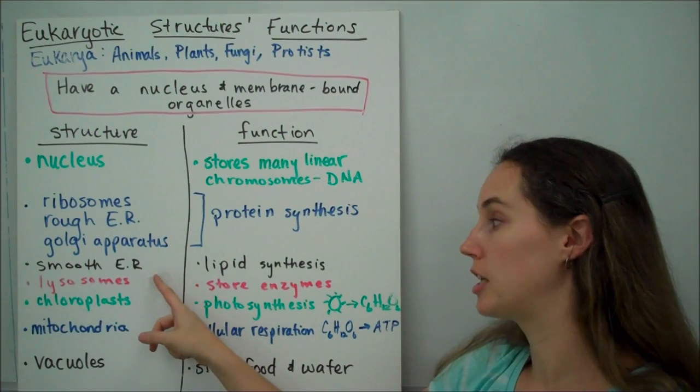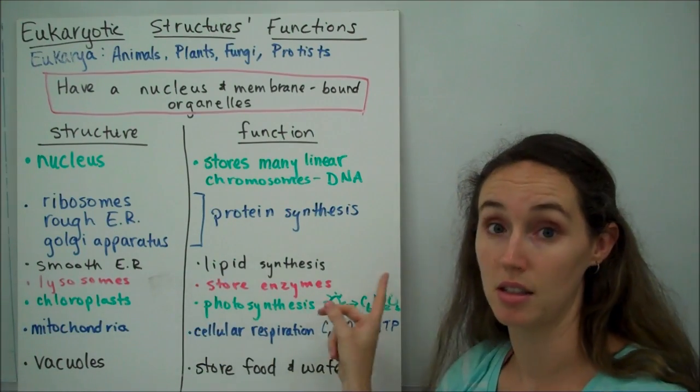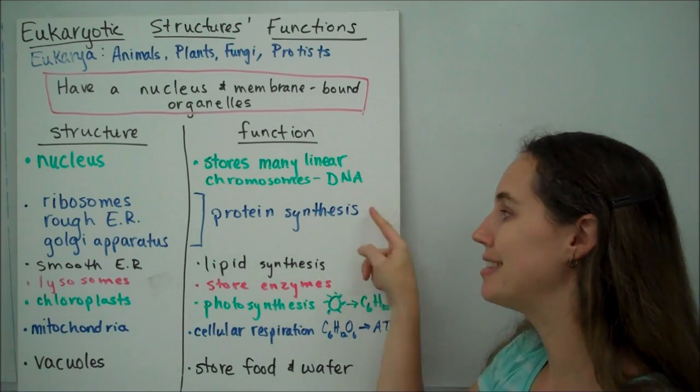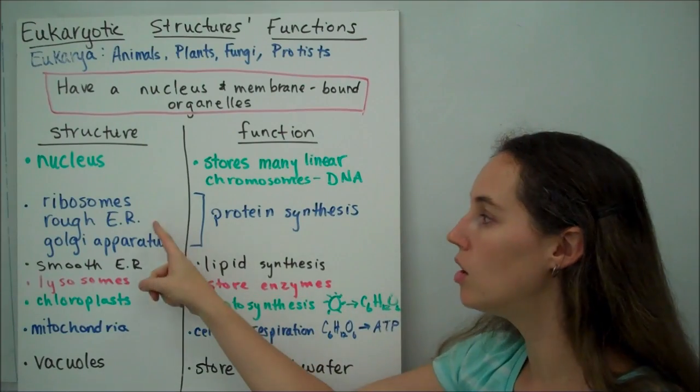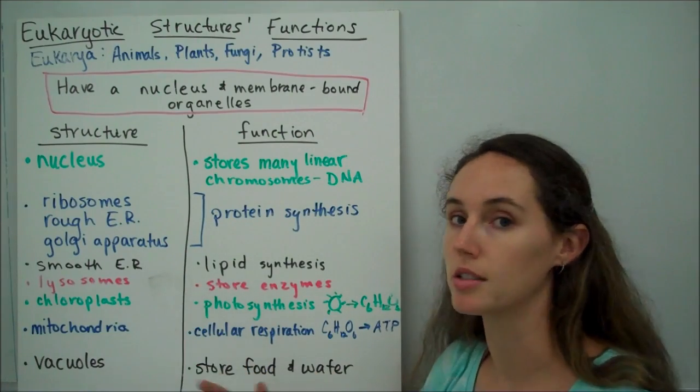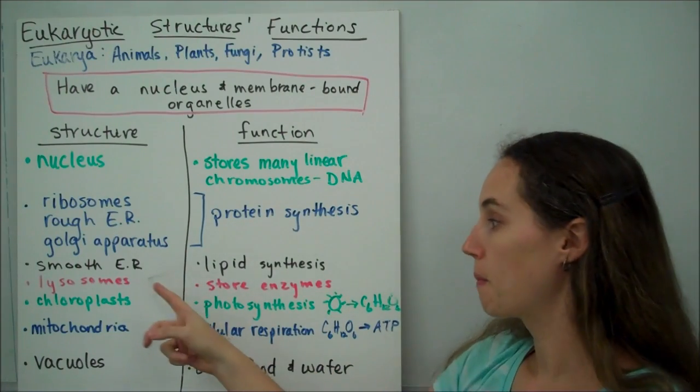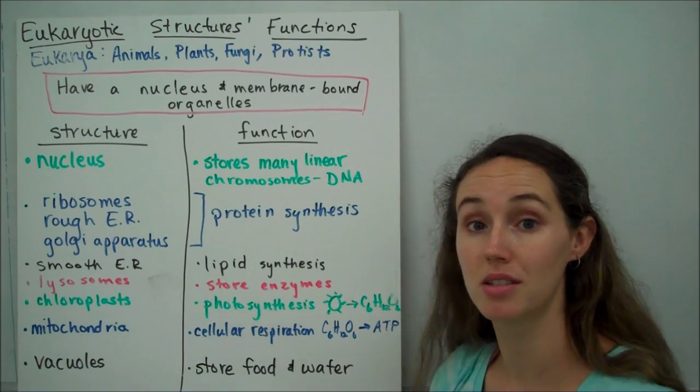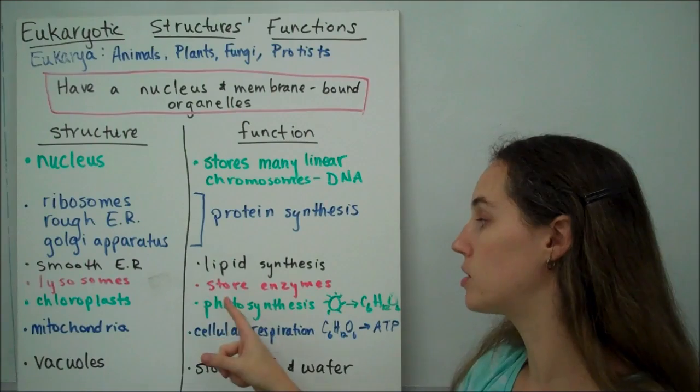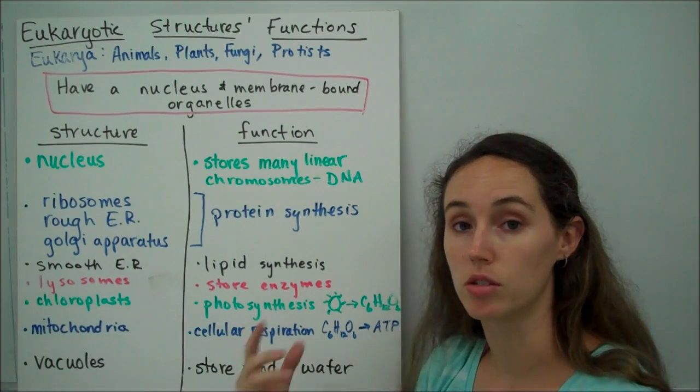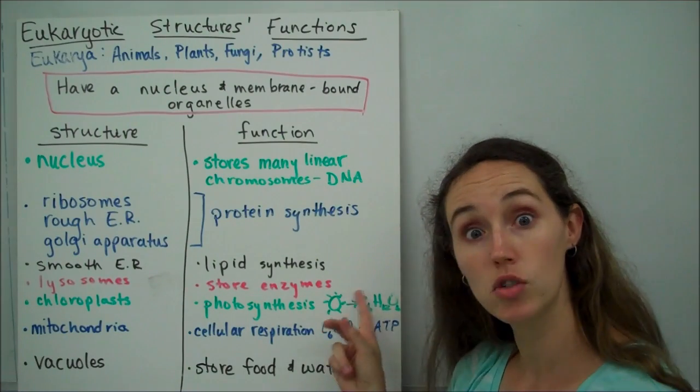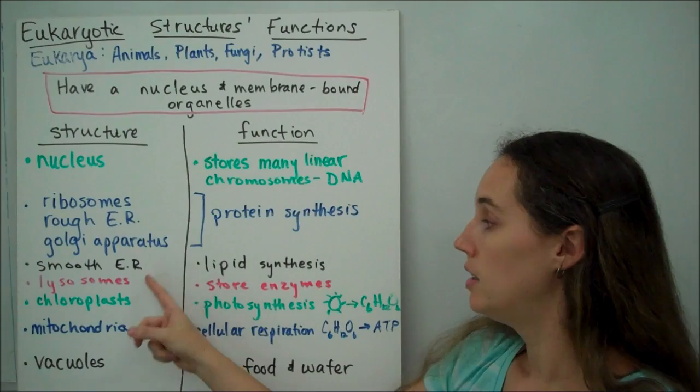Smooth endoplasmic reticulum's job is to synthesize lipids. Now, the difference between smooth ER and rough ER is not only its function, but we call rough ER rough because it's studded with ribosomes. Right? Whereas smooth ER does not have any ribosomes. Next are lysosomes. Some, but not all organisms have these, but their job is to store enzymes. Lys, L-Y-S, is a root word meaning to break apart, and that's one of the main jobs of enzymes is to break things apart.